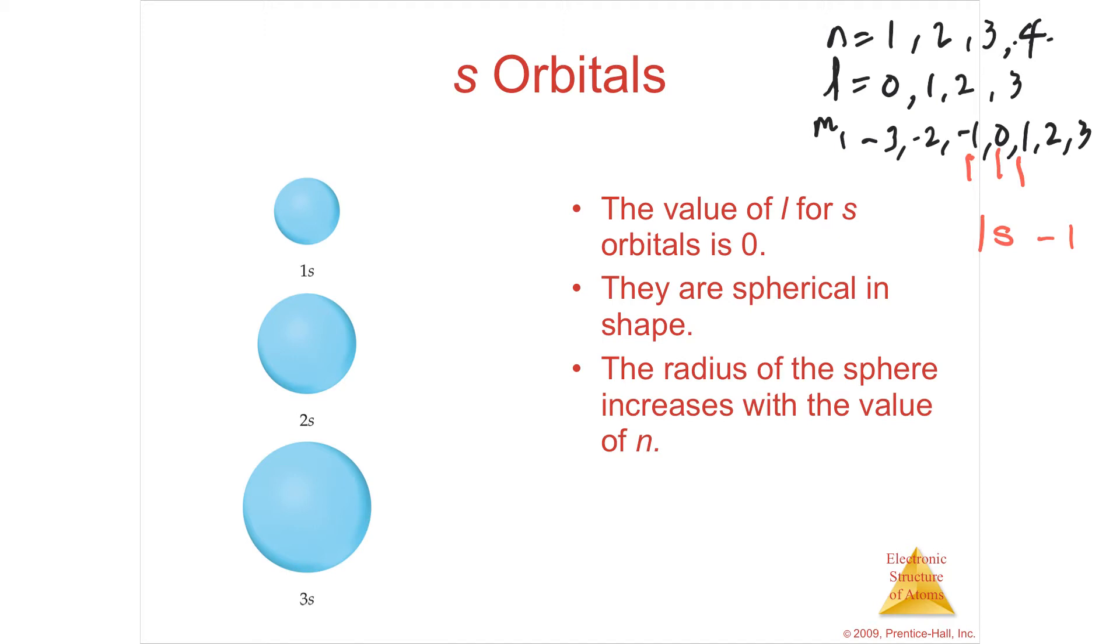If I have l equals 2, then I go from 2, 1, 0, negative 1, negative 2, which means the d has 5. And if I have l equals 3, then m equals 1 is 3, 2, 1, 0, negative 1, negative 2, negative 3, which means the f equals 7.